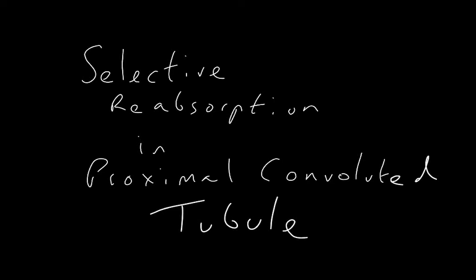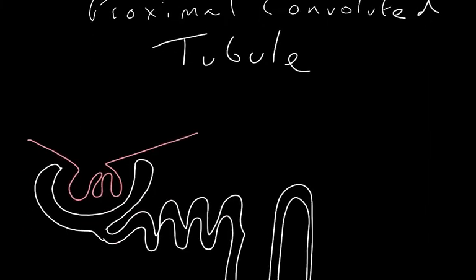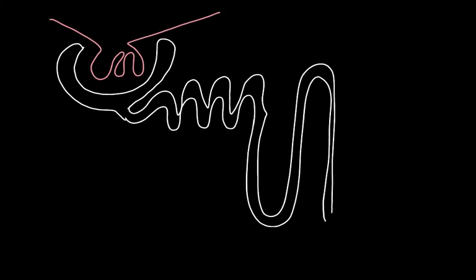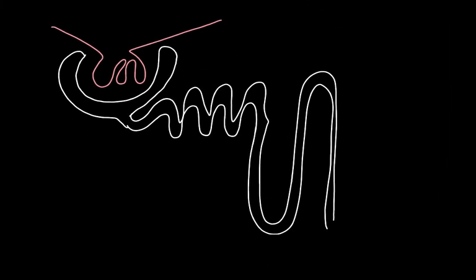A quick run through of all the useful things that get reabsorbed in the proximal convoluted tubule of the kidney. Let's start with a look at the nephron, the functional unit of the kidney.